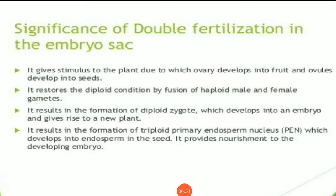Third point: it results in the formation of diploid zygote, which develops into an embryo and gives rise to a new plant. Meaning, both male gametes bhi utilize ho rahe hain. Saath hi, jo syngamy hai, yeh result karta hai formation of zygote, aur yeh zygote finally kya banata hai — embryo banata hai, development of embryo karta hai, jiske vajah se naya plant ka rise ho raha hai. The fourth point is: it results in the formation of triploid primary endosperm nucleus, which develops into endosperm in the seed. It provides nourishment to the developing embryo. Yeh endosperm jo situated hai, bilkul embryo sac ki jo vicinity hai, wahin pe middle mein hi ban raha hai, toh jiske vajah se kya ho raha hai, embryo hai — jo growing embryo hai — usko food readily available mil raha hai because of this endosperm. Aur jo seeds bhi develop honge, woh kaafi zyada viable aur kaafi zyada high percentage of germination karenge. Toh yeh kaafi zyada ek accha method hai — double fertilization ka.